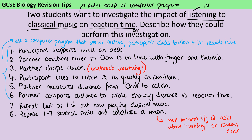Alternatively, instead of the ruler drop test, you could use a computer program where participants sit, pictures flash up on screen, they click a button, and it records the reaction time directly. Then you do the whole thing again listening to classical music, and for both groups you calculate a mean.